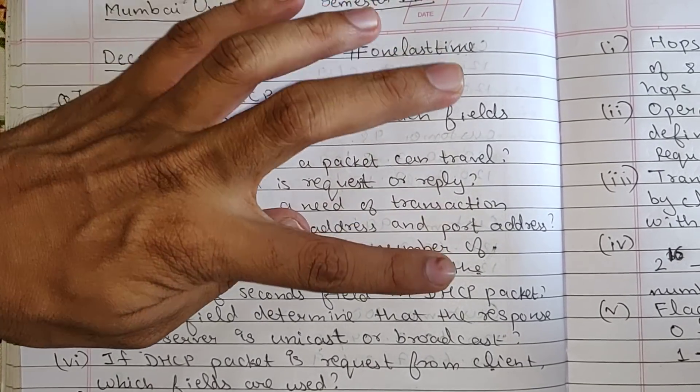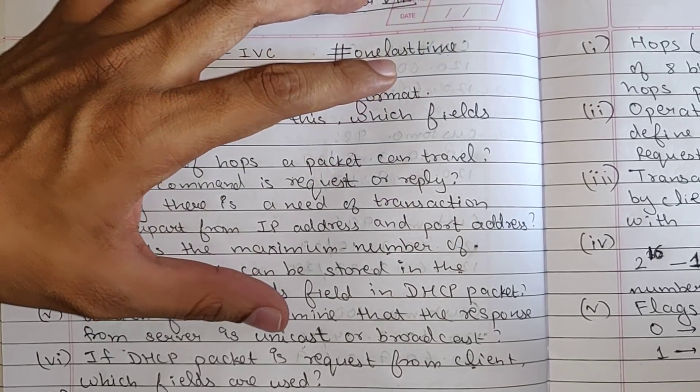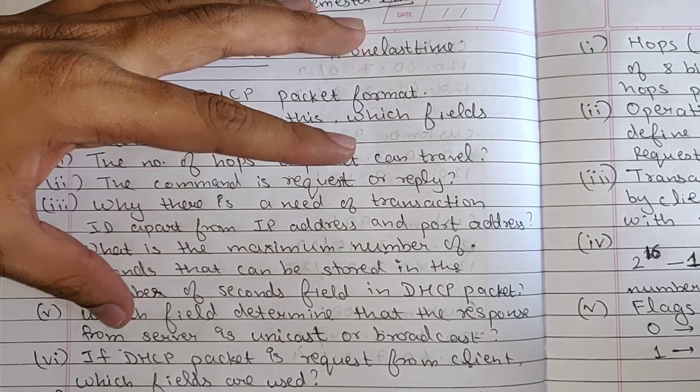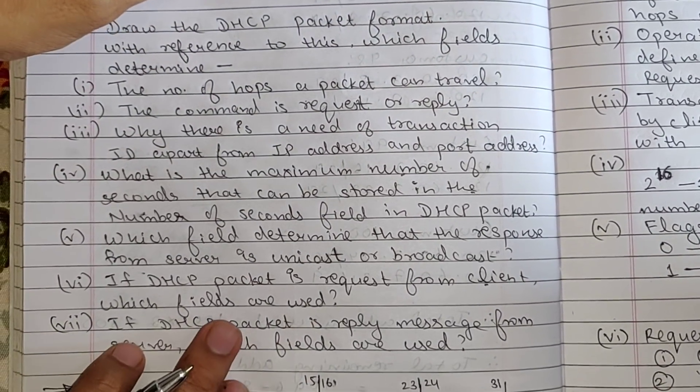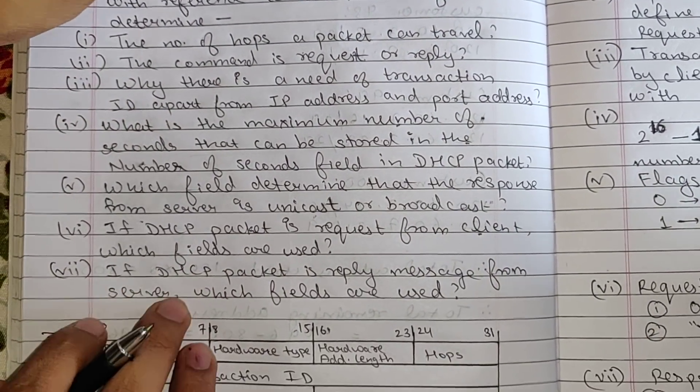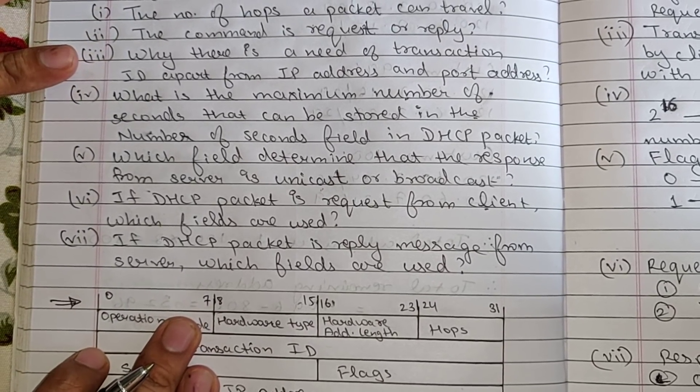What is the maximum number of seconds that can be stored in the number of seconds field in DHCP packet. Which field determines that the response from server is unicast or broadcast.